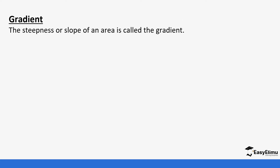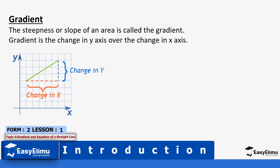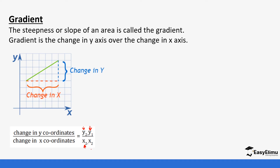Gradients refer to the steepness or slope of a line, which is usually called the gradient. When you want to calculate the gradient, we do so by getting the change in y over the change in x. In our calculation, we take the second value of the y-axis minus the first value, divided by the second value of the x-axis minus the first value of the x-axis.